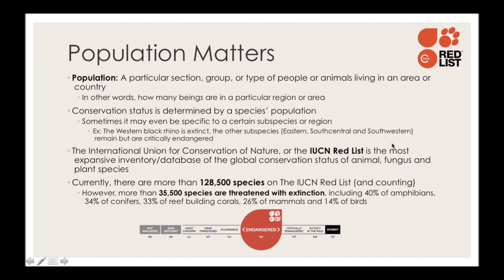The IUCN Red List is a wonderful resource. You can look up any species and it will tell you if they are least concerned, near threatened, vulnerable, endangered, critically endangered, extinct, and so on. It's a great tool for scientists, interested citizens, and legislators, providing useful information for determining conservation status.